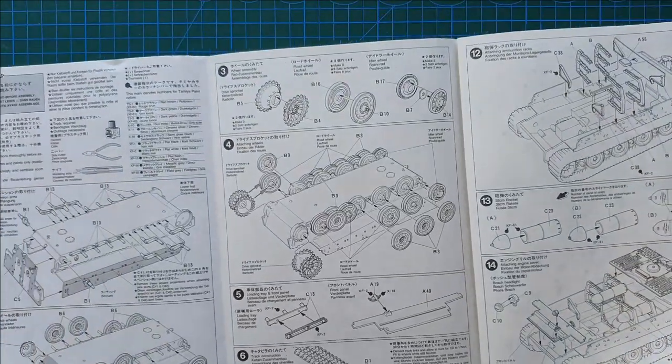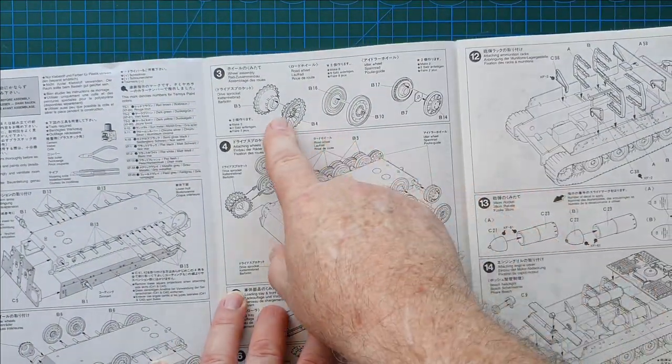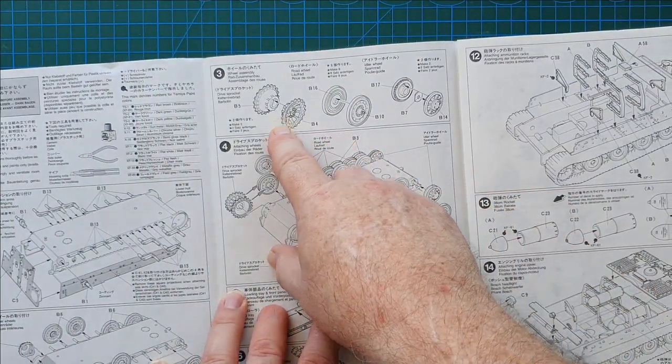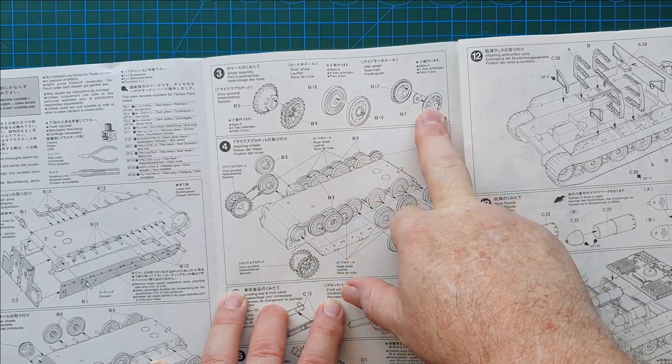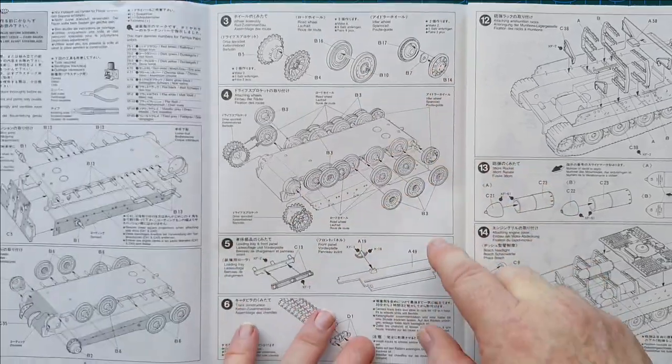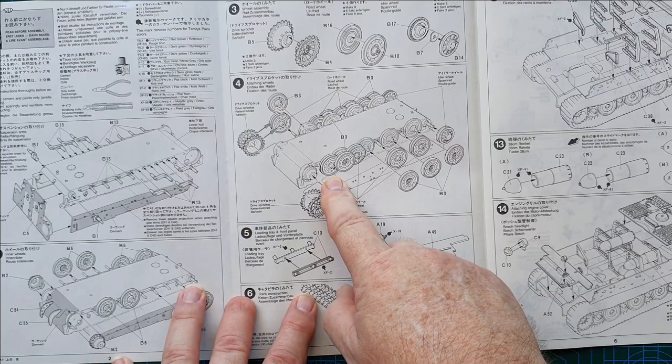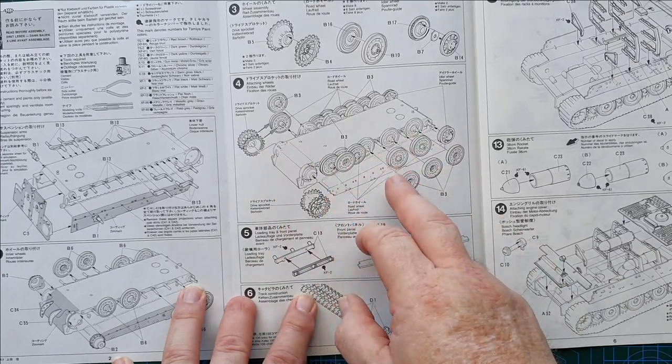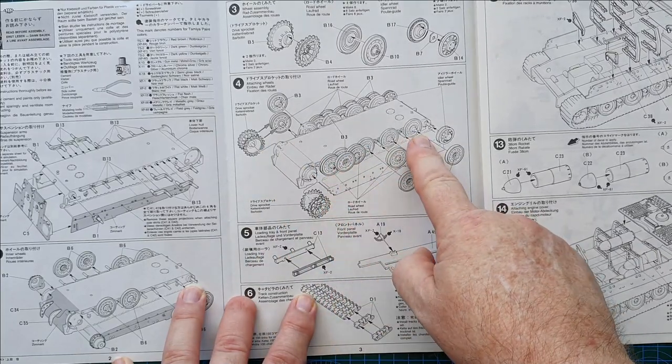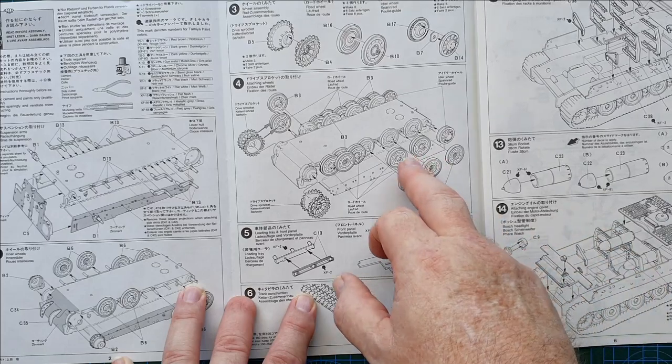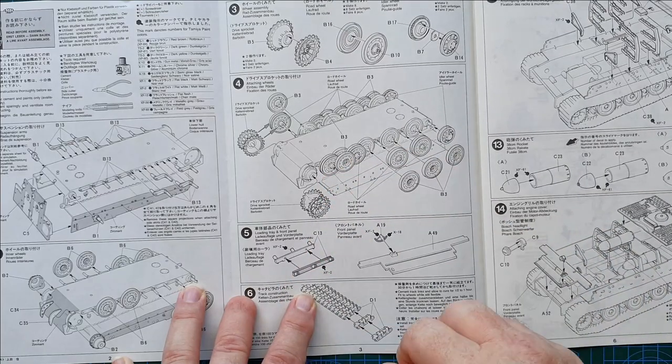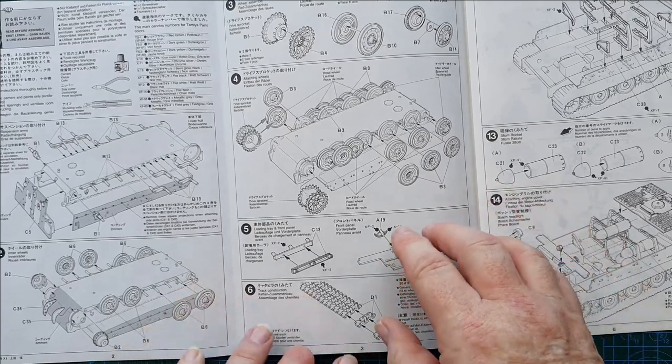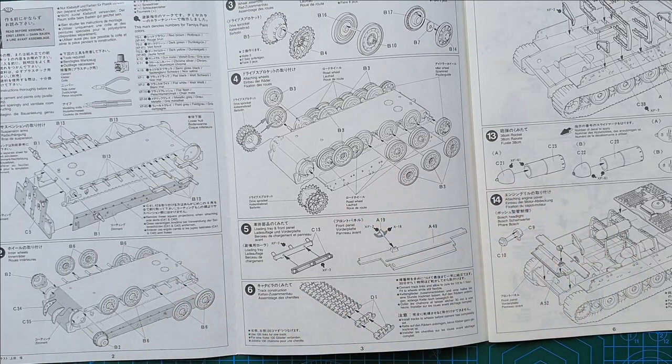You've got your drive sprocket, road wheels, and idler wheel. Following the instructions shows you exactly - as this is an interleaved pattern Tiger chassis, you'll have to be careful how you set the wheels out, but you shouldn't have a problem if it's a Tamiya kit after all.